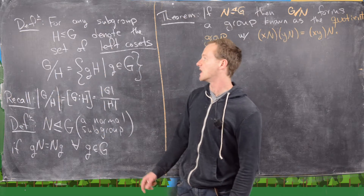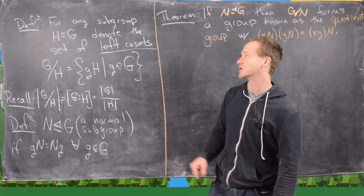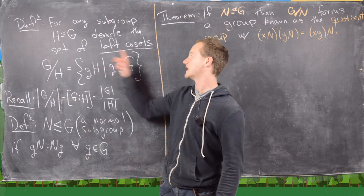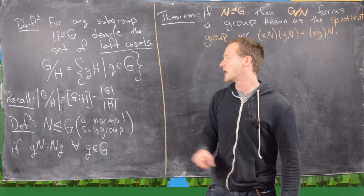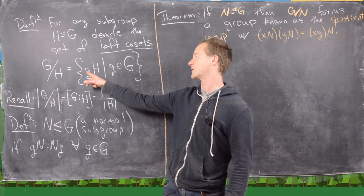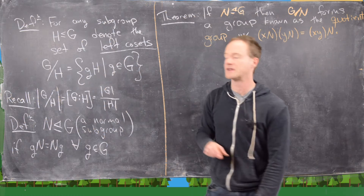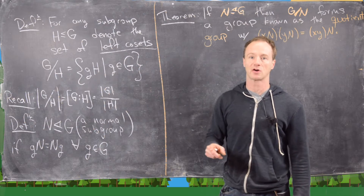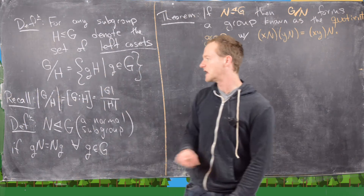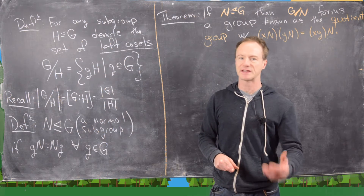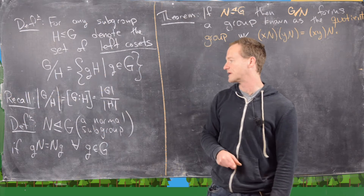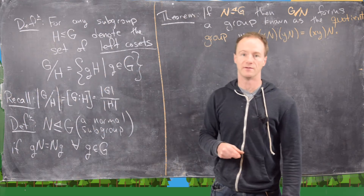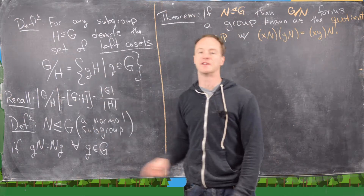The first definition is for the set of left cosets and some notation. For any subgroup H of G, denote the set of left cosets by G over H — this is the set of left cosets with coset representative g and subgroup H, running over all elements of the group. We usually say 'G by H.' By Lagrange's theorem, the number of left cosets equals the index of the subgroup, which also equals the size of the group divided by the size of the subgroup — this division only makes sense for finite groups. This provides some motivation for the notation.